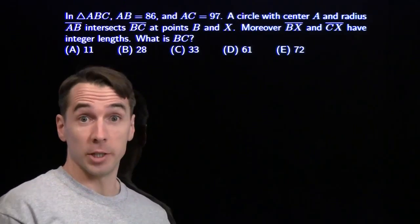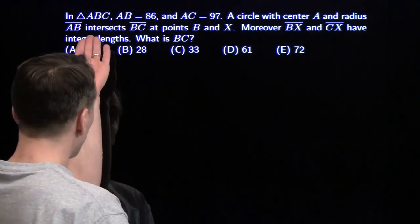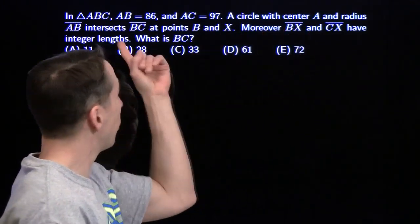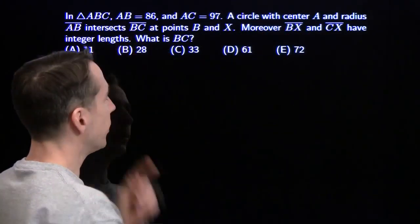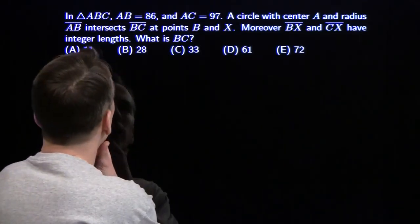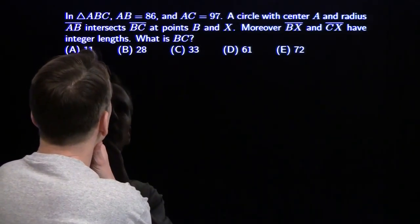We've got a geometry problem here, so you know where we're going to start. We're going to draw the diagram. Got a triangle, couple side lengths, have a circle centered at one of the vertices of the triangle, and the radius is one of the side lengths of the triangle, so it's going to go through one of the vertices.